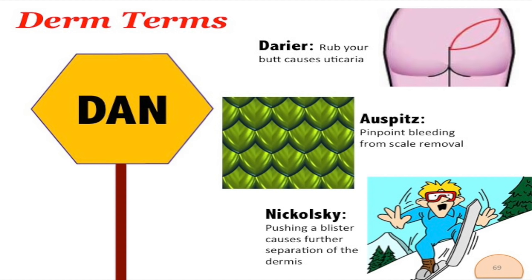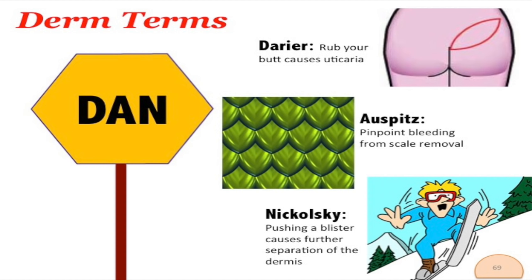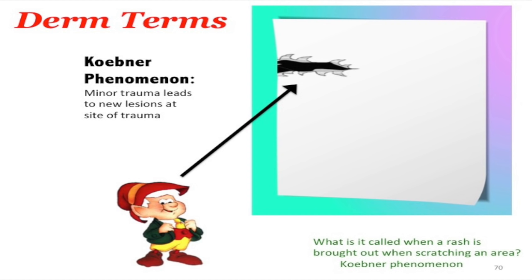Three dermatologic signs: Darier's sign — rub a lesion and you get allergic raised lesions (urticaria pigmentosa). Auspitz sign — remove a scale and there's pinpoint bleeding (psoriasis). Nikolsky sign — pushing on a blister causes further separation of the dermis. Koebner's phenomenon — minor trauma leads to a new lesion at the site of trauma.